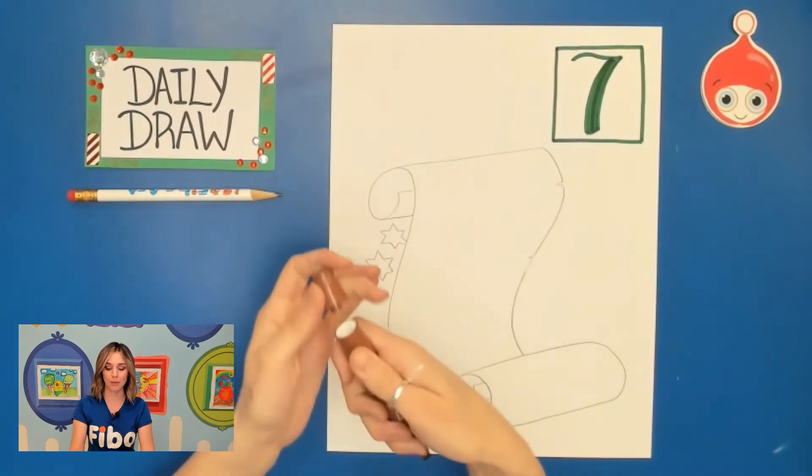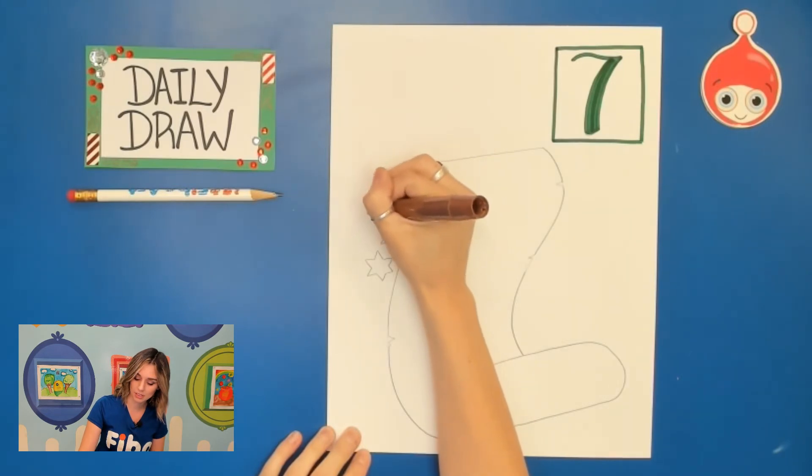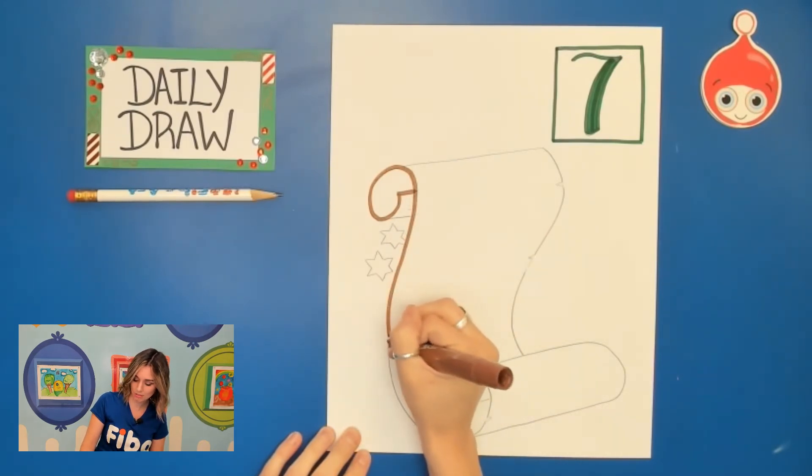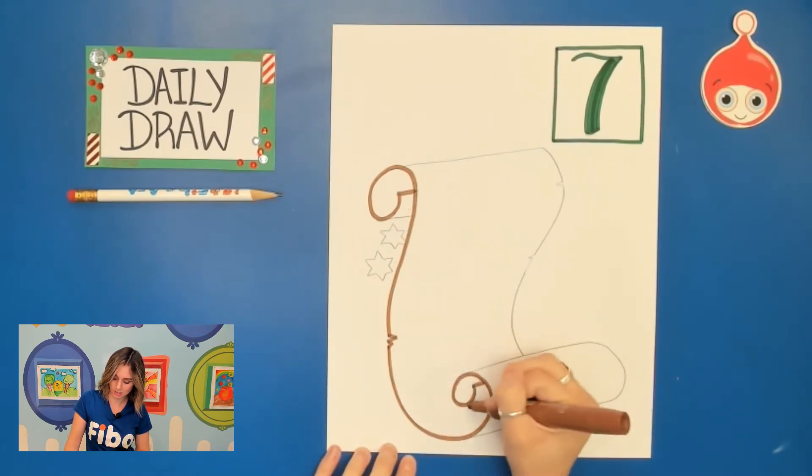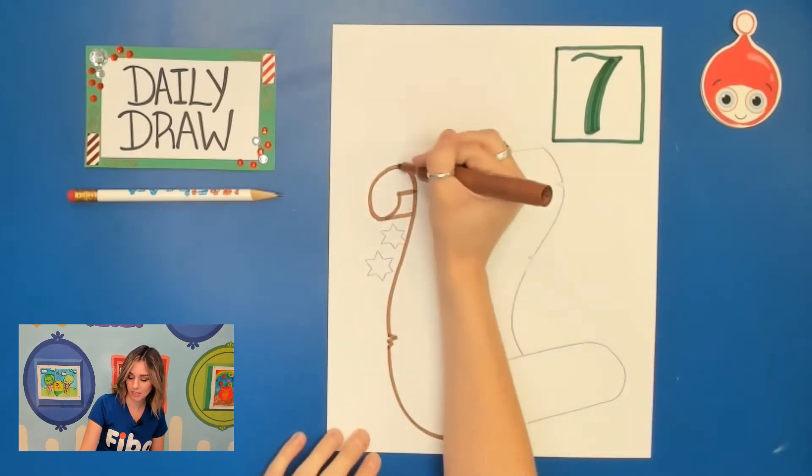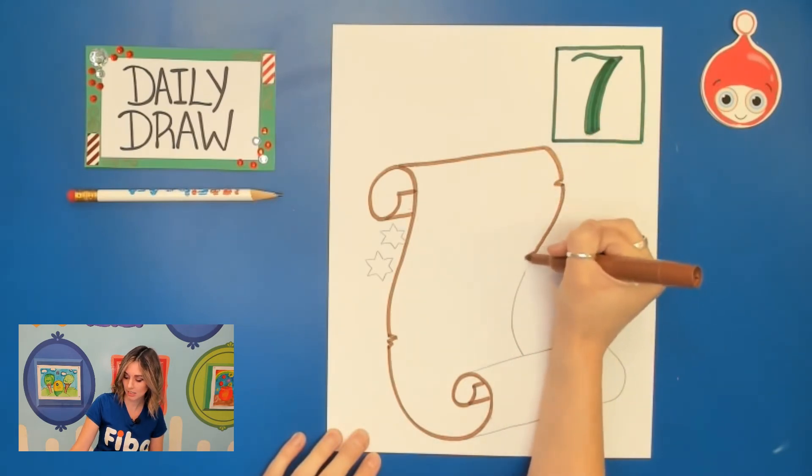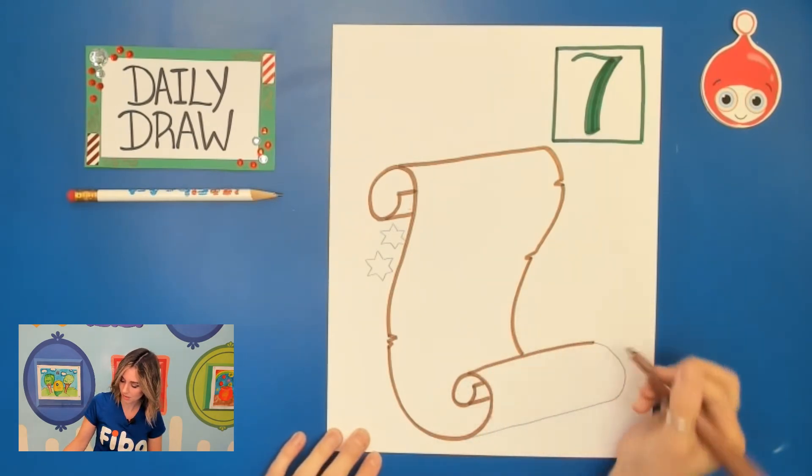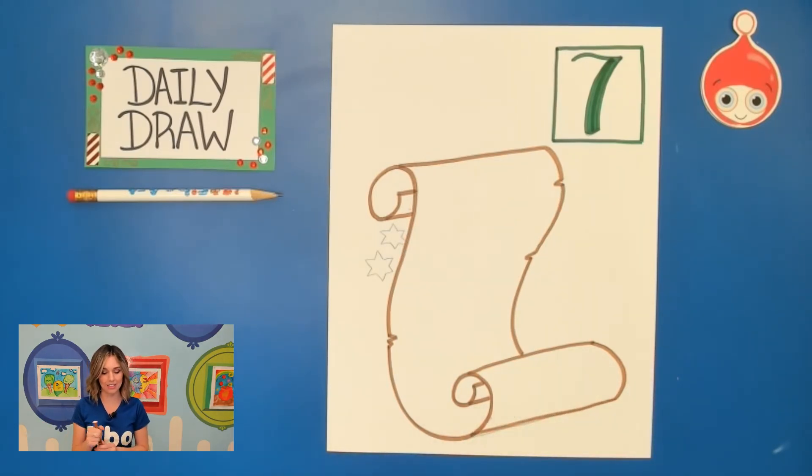So first I'm going to be taking my brown and I'm just going to outline Santa's list with that brown. And I did make sure to erase part of those lines. And so I'm just very carefully with my brown going over those pencil lines. All right, so there is that part done.